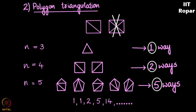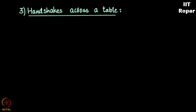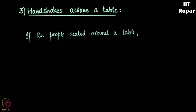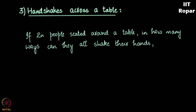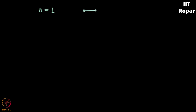The next example is handshakes across the table — this is interesting. If 2n people are seated around a round table, in how many ways can they all simultaneously shake hands with another person at the table such that nobody crosses arms? We don't want two crossing handshakes. When n is equal to 1 there are two people and this can be done only in one way.